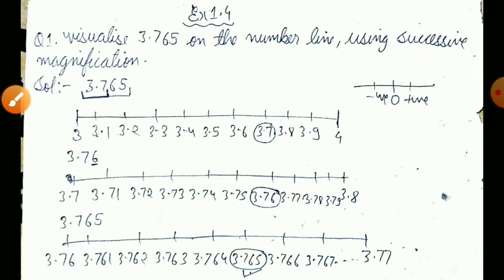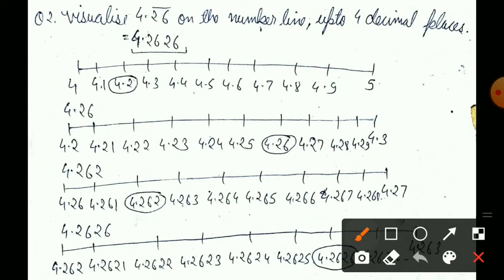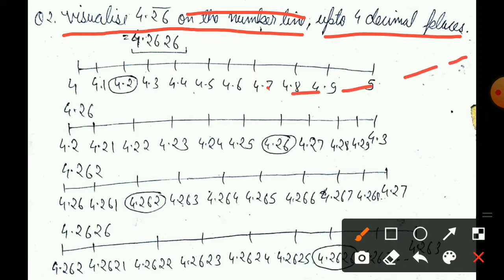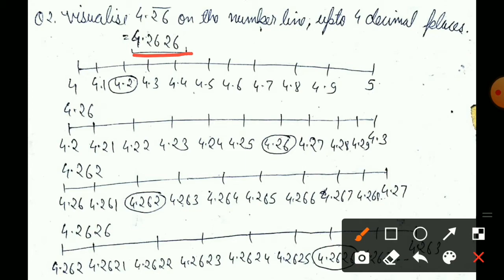Now come to the second question. The second question is the same, but the difference between first and second question - in the first question it was 3.765, and the second question is an irrational number. This number repeats, but the question mentions the limitation: visualize 4.26 repeating on the number line up to 4 decimal places. The point after the right side, 4 digits you have to do.